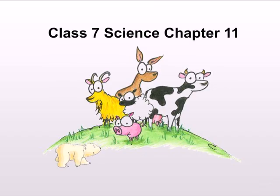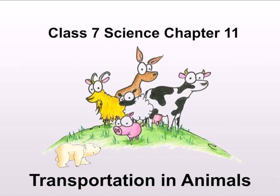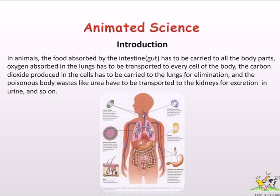Class 7 Science Chapter 11: Transportation in Animals. In animals, the food absorbed by the intestine or gut has to be carried to all the body parts. Oxygen absorbed in the lungs has to be transported to every cell of the body. The carbon dioxide produced in the cells has to be carried to the lungs for elimination, and the poisonous body wastes like urea have to be transported to the kidneys for excretion in urine.